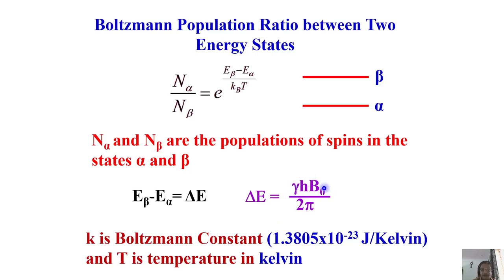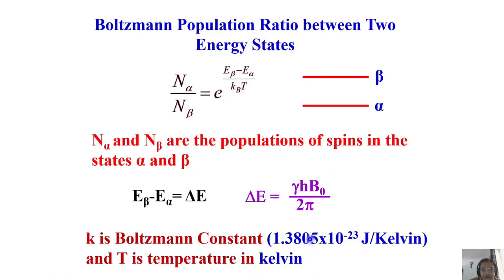I know k_B, the Boltzmann constant, whose value is well known. Temperature must be expressed in Kelvin. All the parameters are known — the only thing in my control is B-naught, the magnetic field strength. I can vary the magnetic field to any value I want and calculate the energy separation ΔE — the difference in energy between the two states.